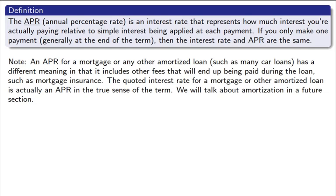One note: the APR for a mortgage or car loan is sometimes a little bit different from the APR we're talking about in this lesson. Sometimes lenders include extra fees such as taxes, insurance, and other costs associated with the mortgage, and they base the APR on those rather than the actual interest you're paying for the loan itself.